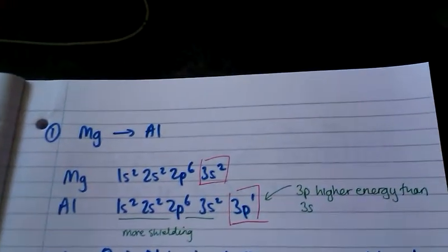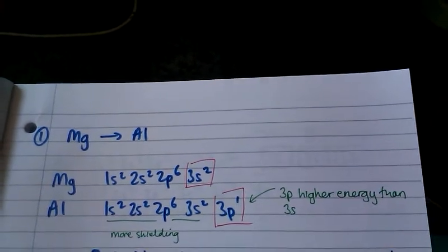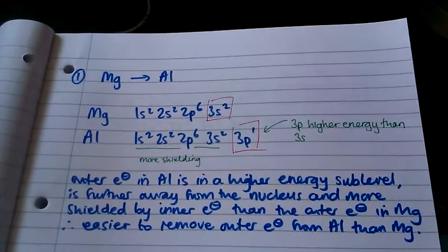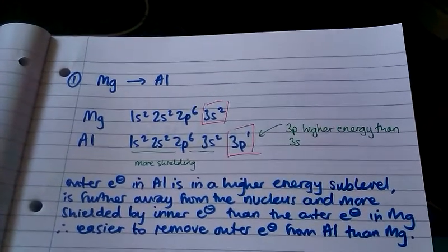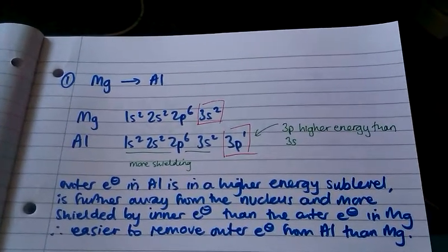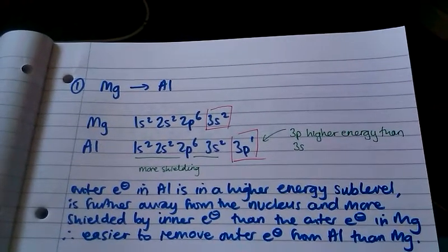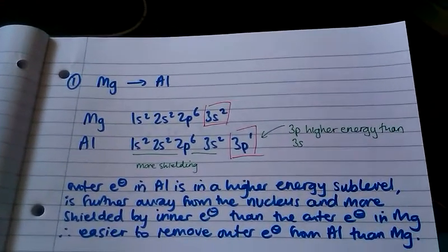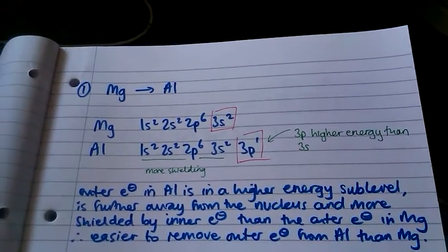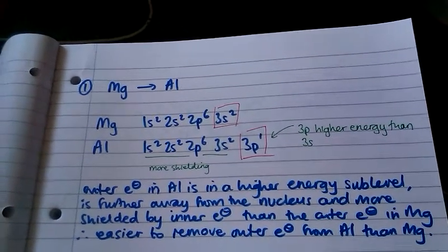For magnesium going to aluminium, if we write out the electronic configurations, we see that the outer electron in aluminium is in a higher energy sublevel — the 3p sublevel — which is higher energy than the 3s sublevel in magnesium. So the outer electron in aluminium is further away from the nucleus and more shielded by inner electrons than in magnesium, meaning it's easier to remove an outer electron from aluminium than from magnesium.